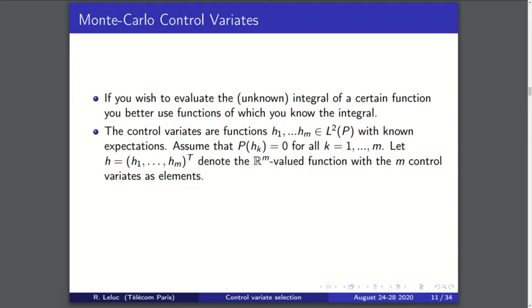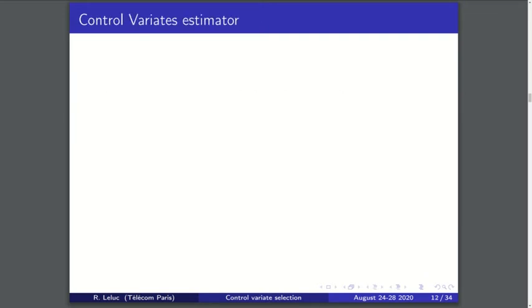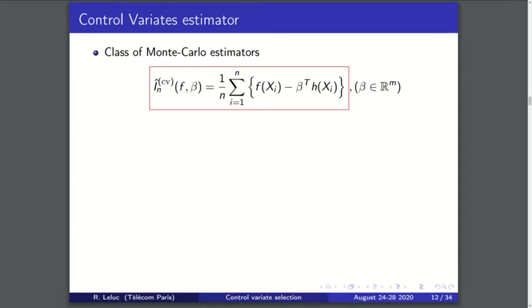Given the control functions, we denote by h the vector with all the control variates as elements and we can perform some linear combination of these control variates. For any coefficient vector β, we have that P(f - β^T h) = P(f). So we can derive a quite simple estimate which is Pn(f - β^T h) which is an unbiased estimator of P(f). This yields a class of Monte Carlo estimates parameterized by the coefficient vector β. Note that if we take β equal to zero, we recover the naive Monte Carlo estimate.